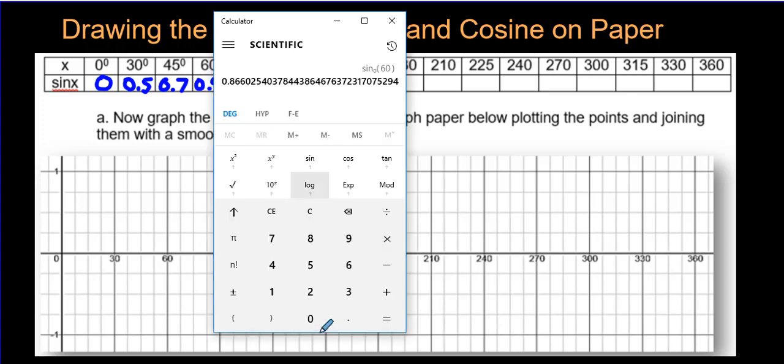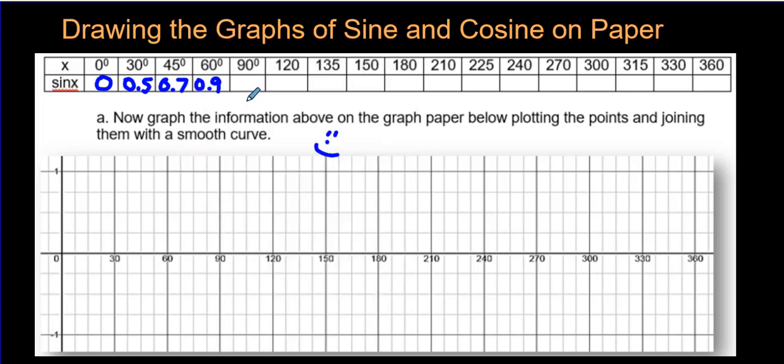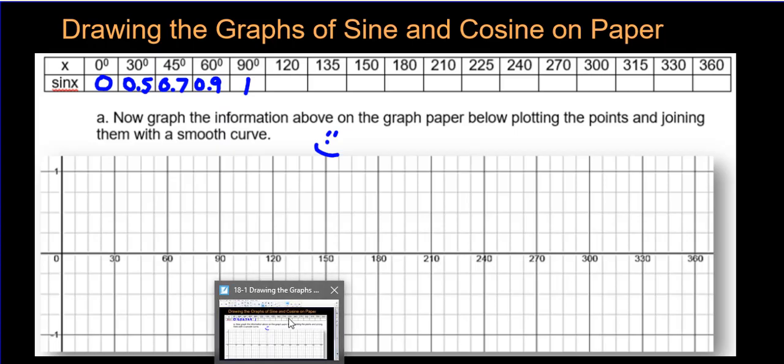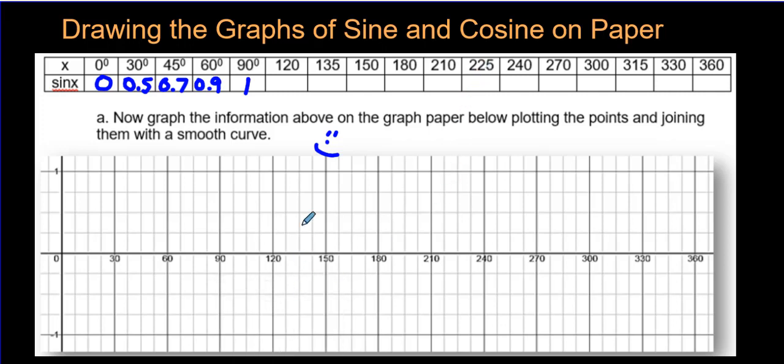Sine of 90 is 1. And then you keep going. So, we could just keep going, but what I'm going to do is start to show you how this curve, it's called the sine curve, is being formed. Okay?